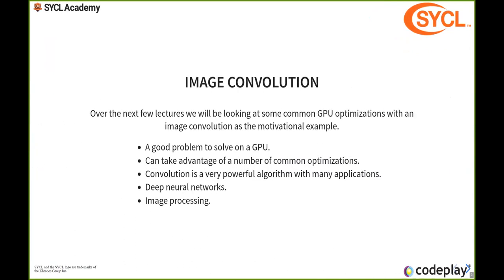It's a good problem to solve on a GPU. We can introduce lots of different hardware features, think about how GPUs work, how memory is loaded, that kind of thing. Convolution is also quite relevant to lots of application developers nowadays, especially if they're involved in developing deep learning applications and deep neural networks, as well as image processing, which was maybe the original application.